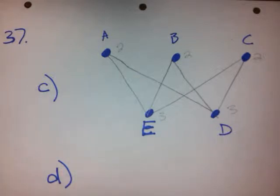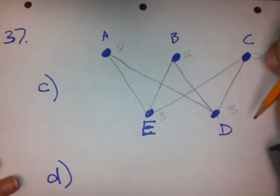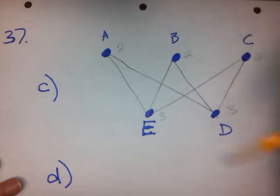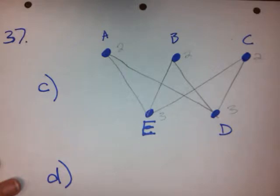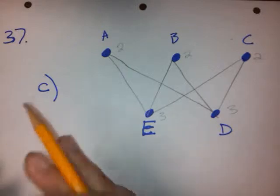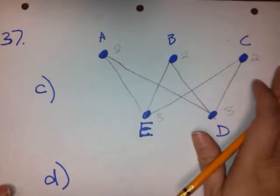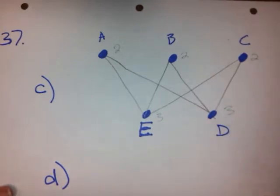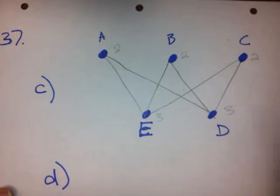We remember that an Euler circuit means that you go on each edge of the graph once and only once and get back to the vertex you started at. If there's an edge in the graph, you've got to go across it, but you can only go across it once. There's a theorem that tells us that for there to be an Euler circuit in a graph, it has to have vertices that are all even.